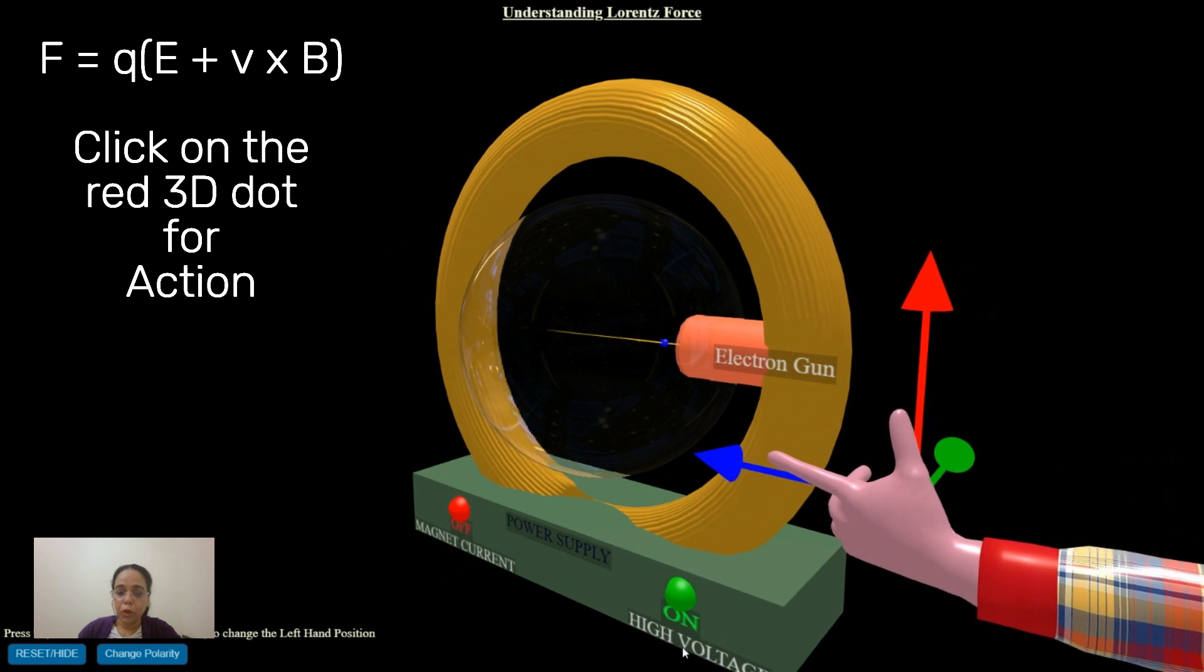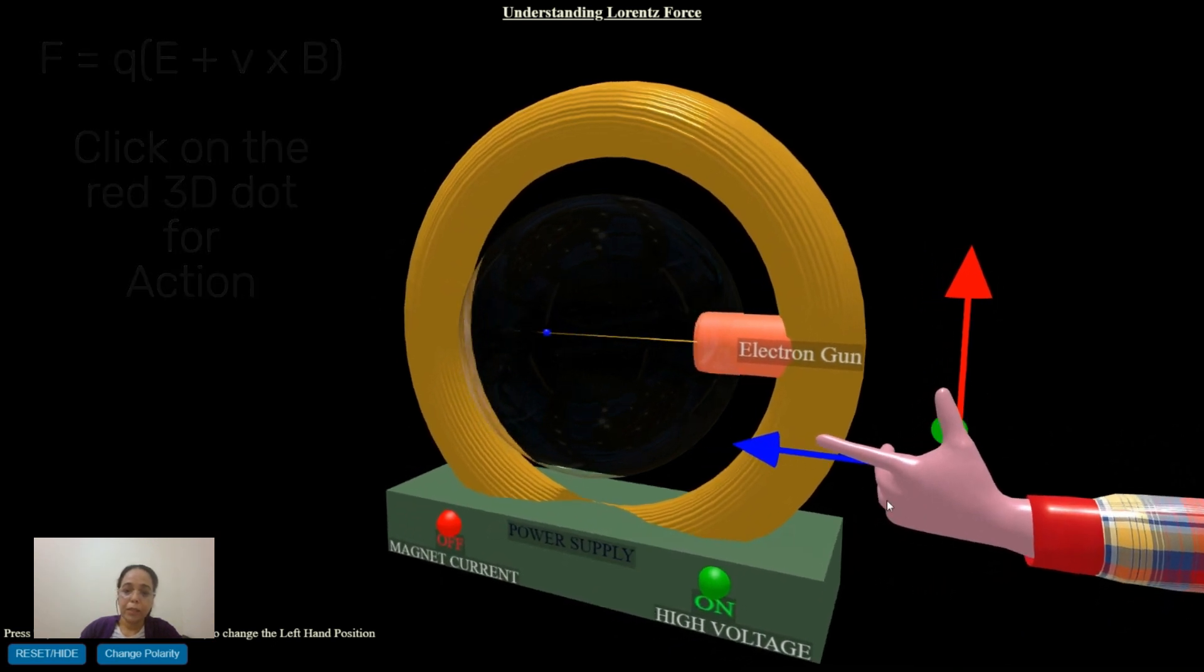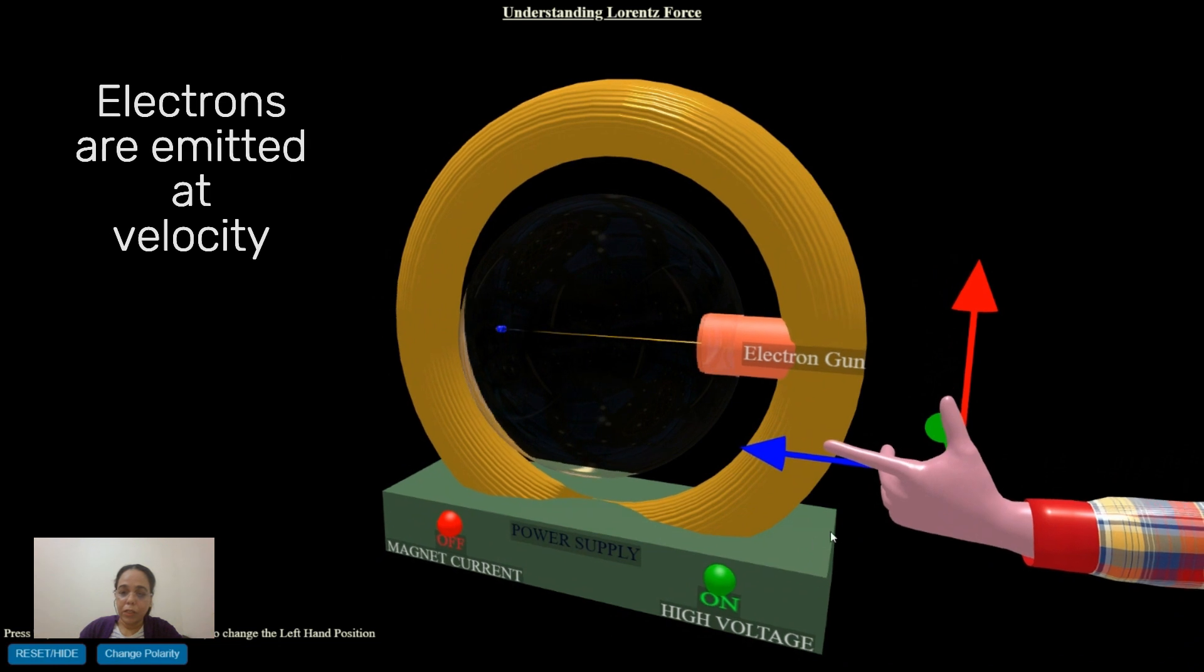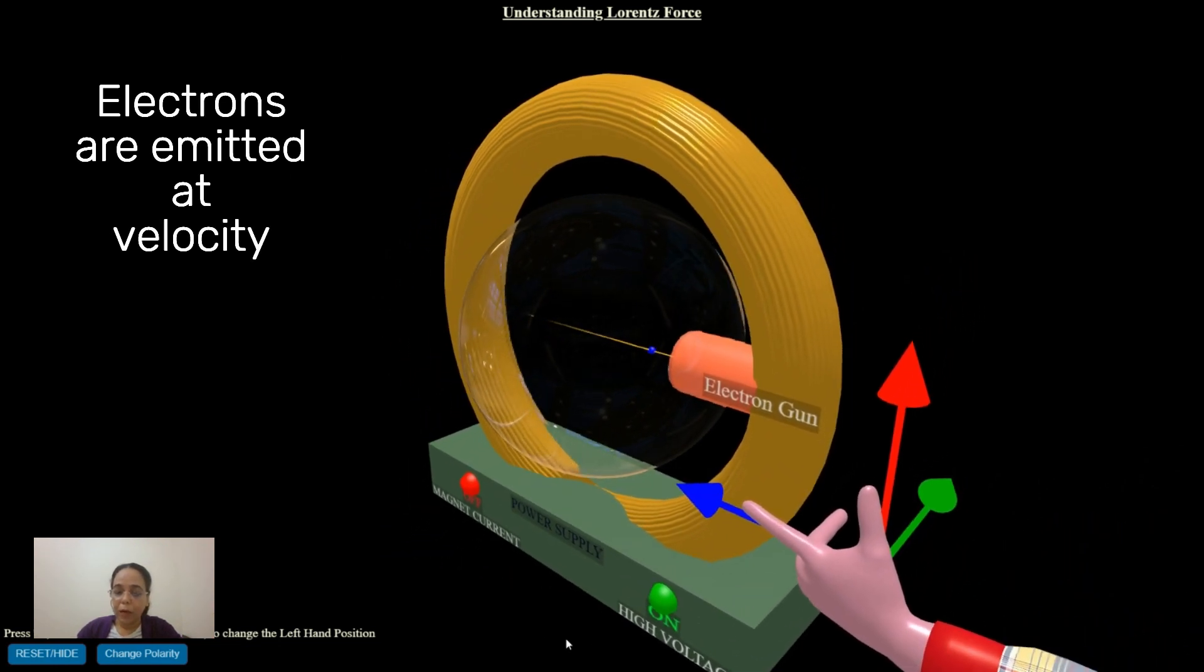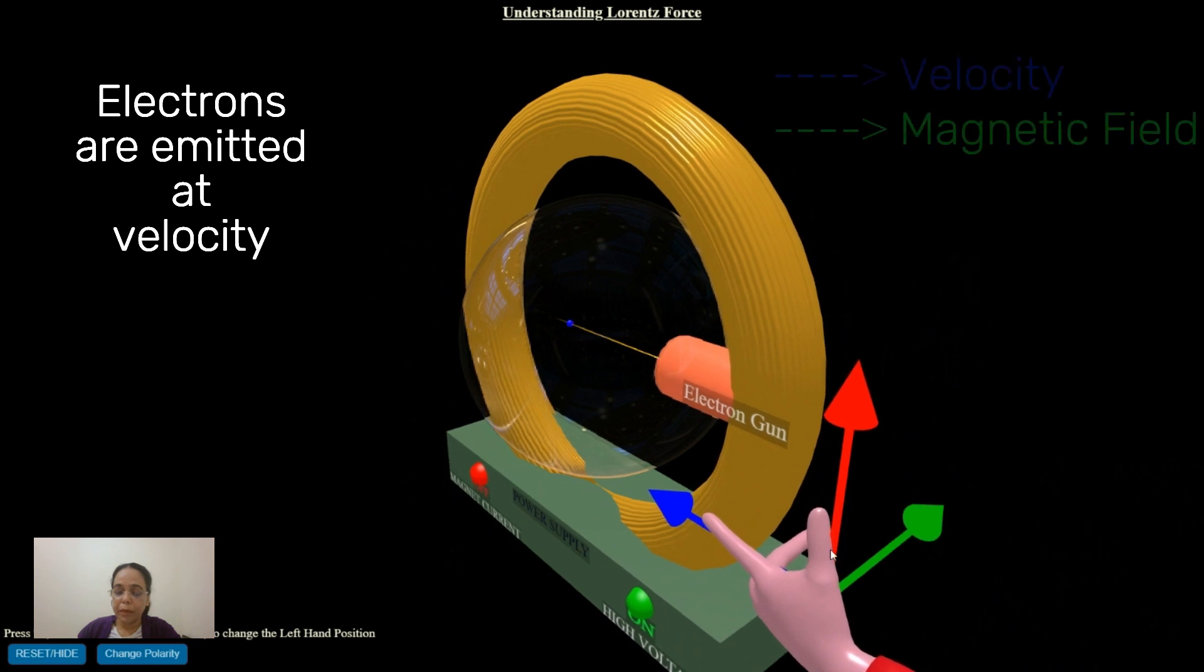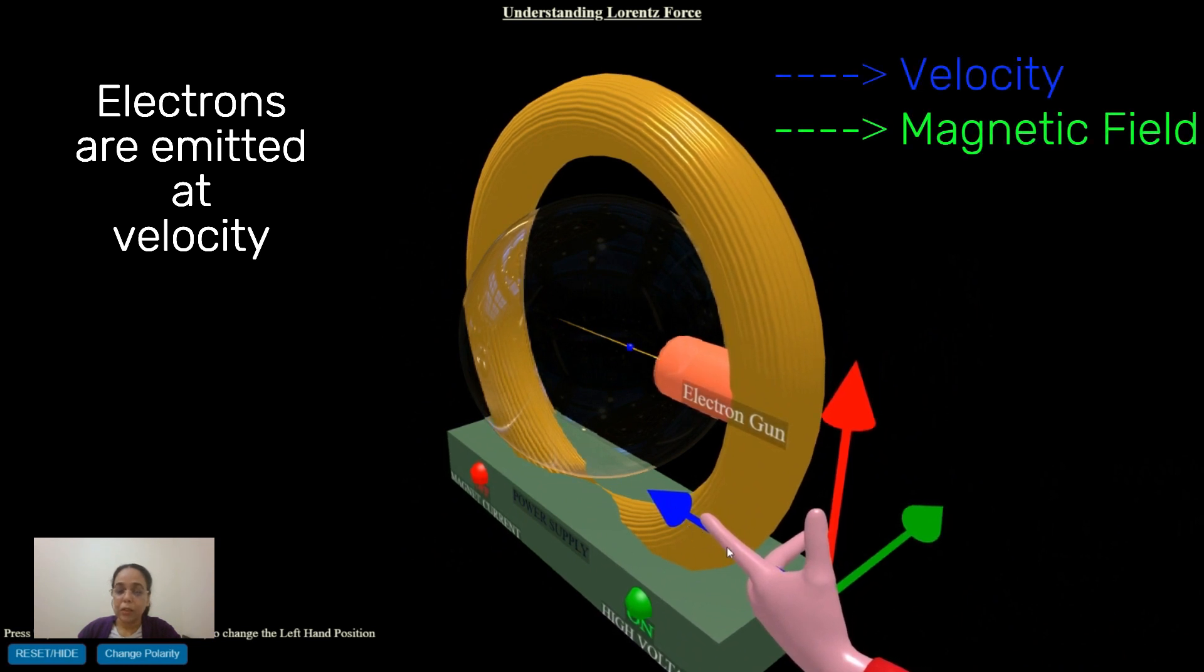When you switch on the current, you see that high energy electrons are emitted from the filament. These electrons travel in a straight path, and the blue arrow shown in this left hand representation, or the index finger or second finger, is pointing along the direction of the electron.